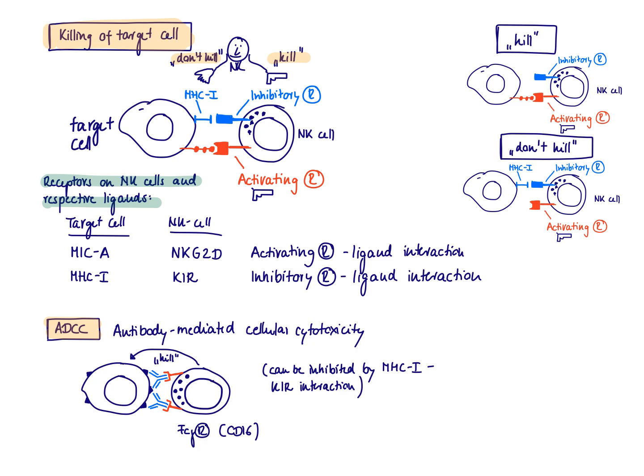How would a don't kill scenario look like? Here you could imagine you have a healthy cell. It's not stressed. It would not express any activating ligands. It has its MHC on the surface, MHC 1. So the good hand is going to screen for MHC 1, it's going to find it. There is no ligand for the activating receptor, so there will be no killing. That would be a typically don't kill scenario.